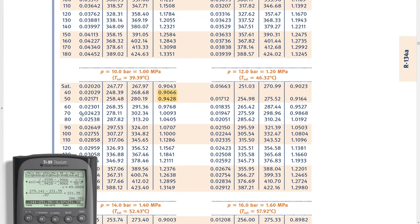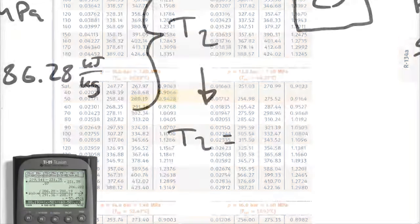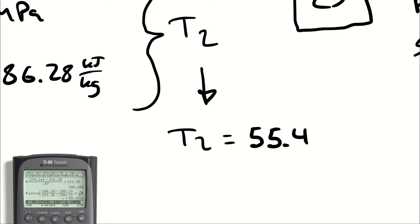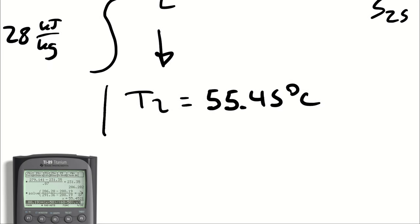On my superheated vapor tables, I see that my enthalpy of 286.28 is going to occur between 50 and 60 degrees Celsius. I can interpolate for the actual value by taking my enthalpy, which is 286.28 minus 280.19, divided by 291.36 minus 280.19, and I'm saying that that's equal to x minus 50, divided by 60 minus 50, which gives me an x value of 55.45. Therefore, the temperature at the end of the process is 55.45 degrees Celsius.